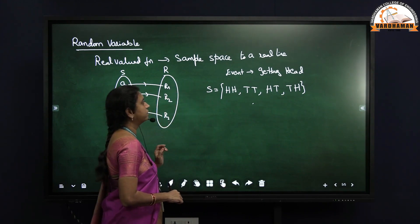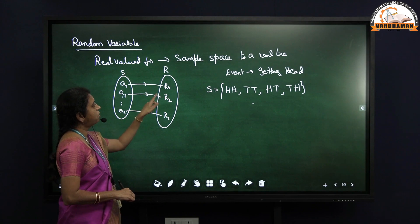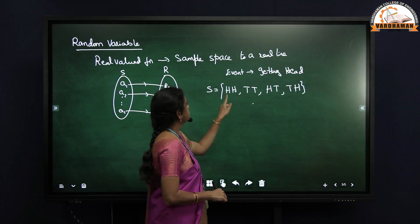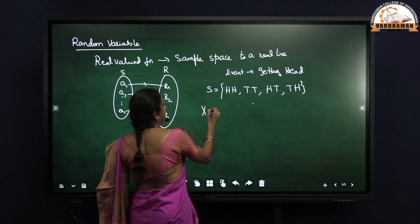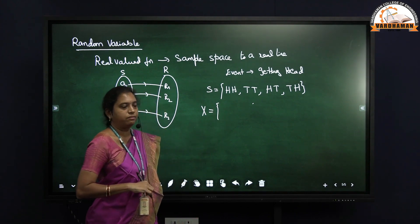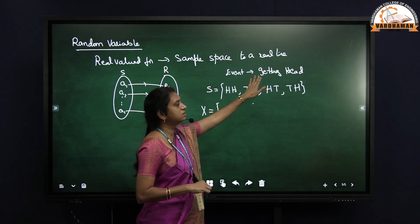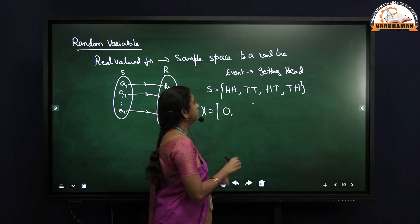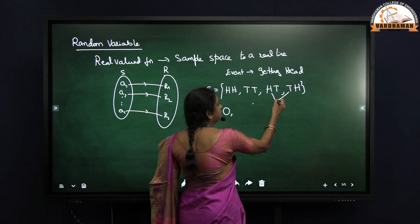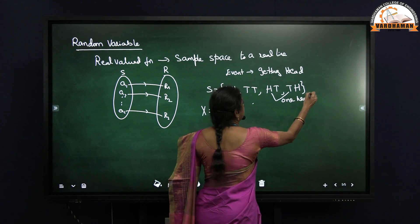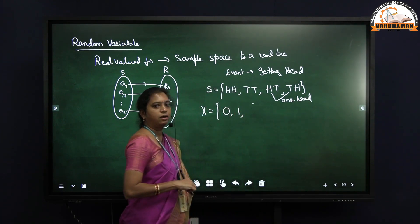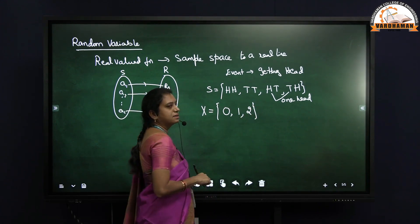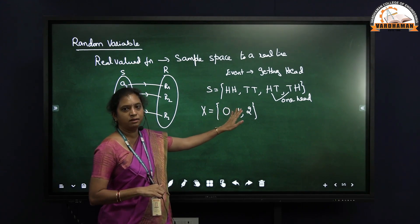Now, for this sample space, we have to write the random variable. I have to map them to a real value. When I am taking the event as getting heads, the random variable X will be: when two tails occur, that is getting no head at all, X = 0. When one head occurs (head-tail or tail-head), X = 1. When two heads occur, X = 2. So the random variable X takes the real values 0, 1, and 2.